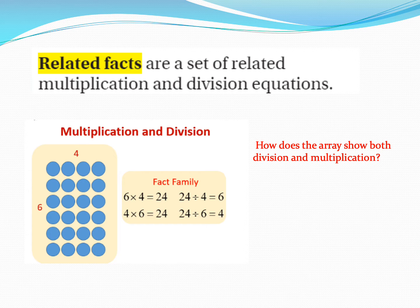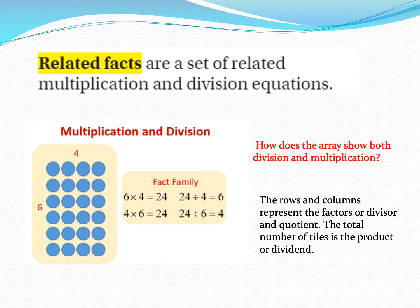How does the array show both division and multiplication? The rows and columns represent the factors or divisor and quotient. The total number of tiles is the product or dividend.